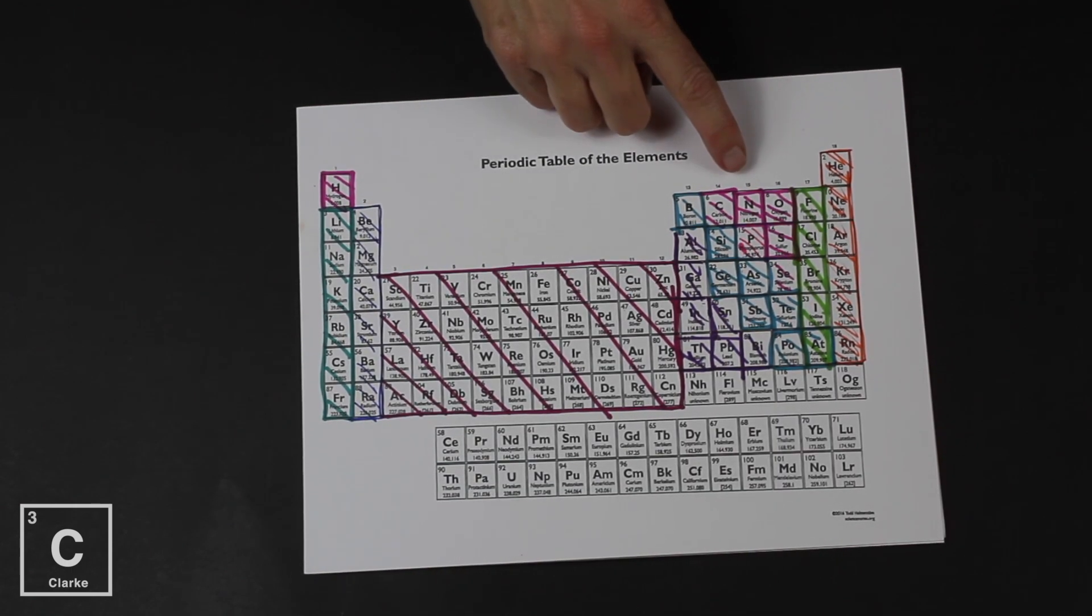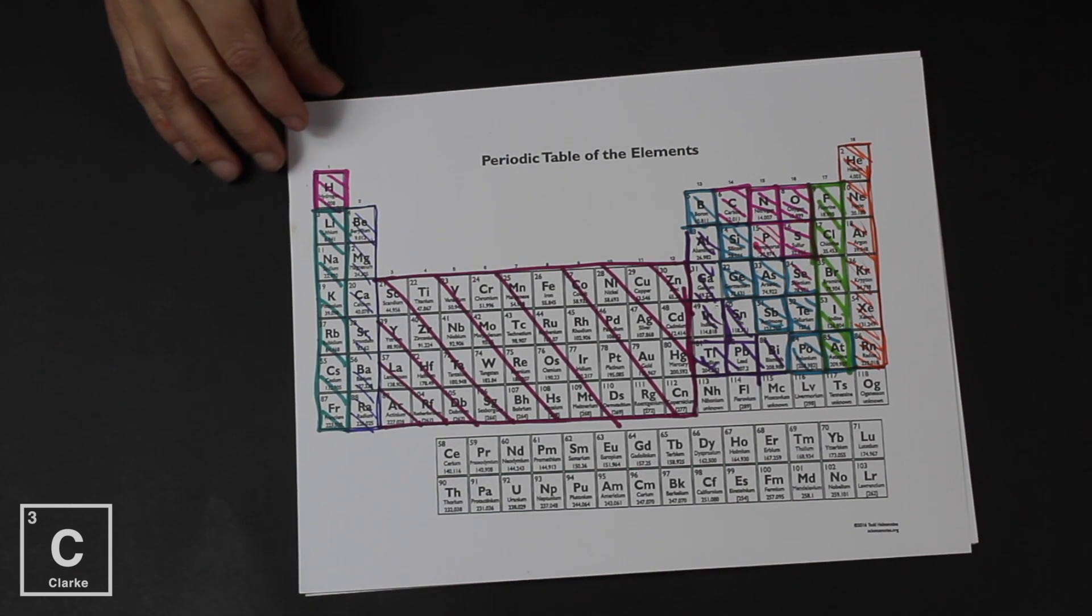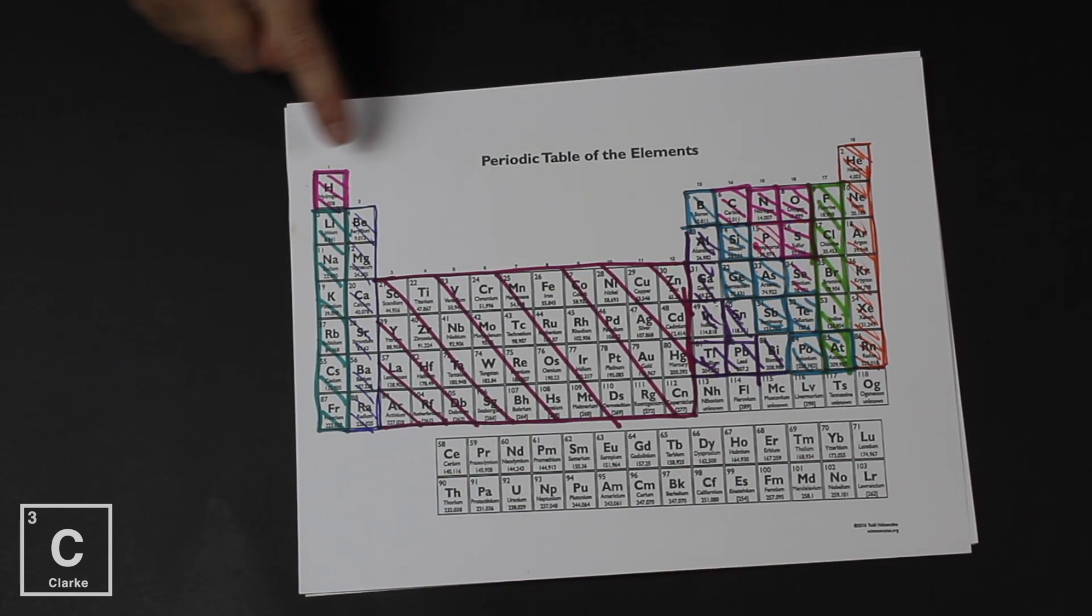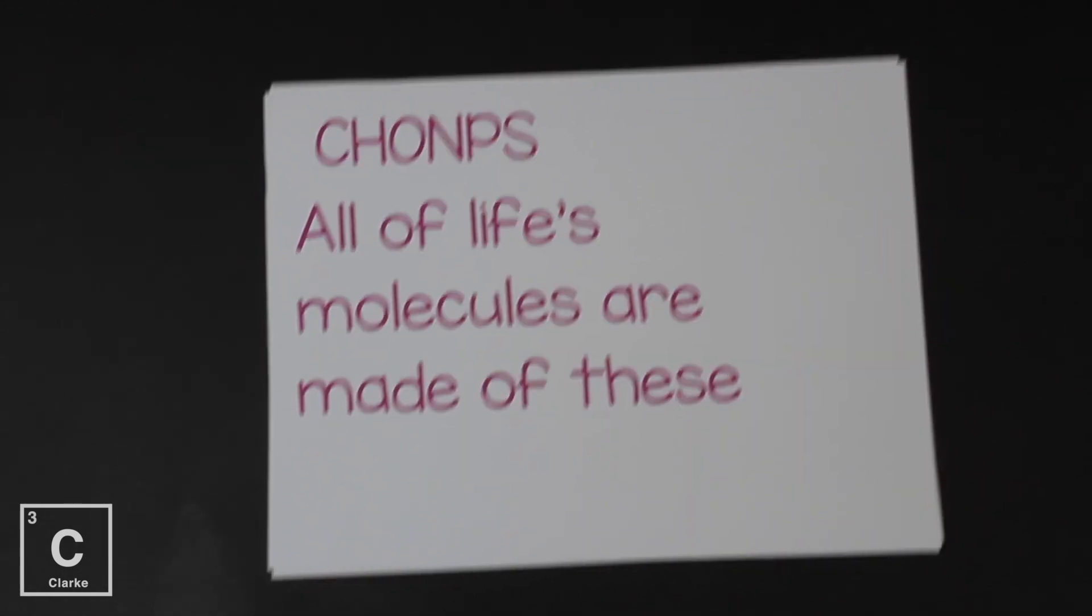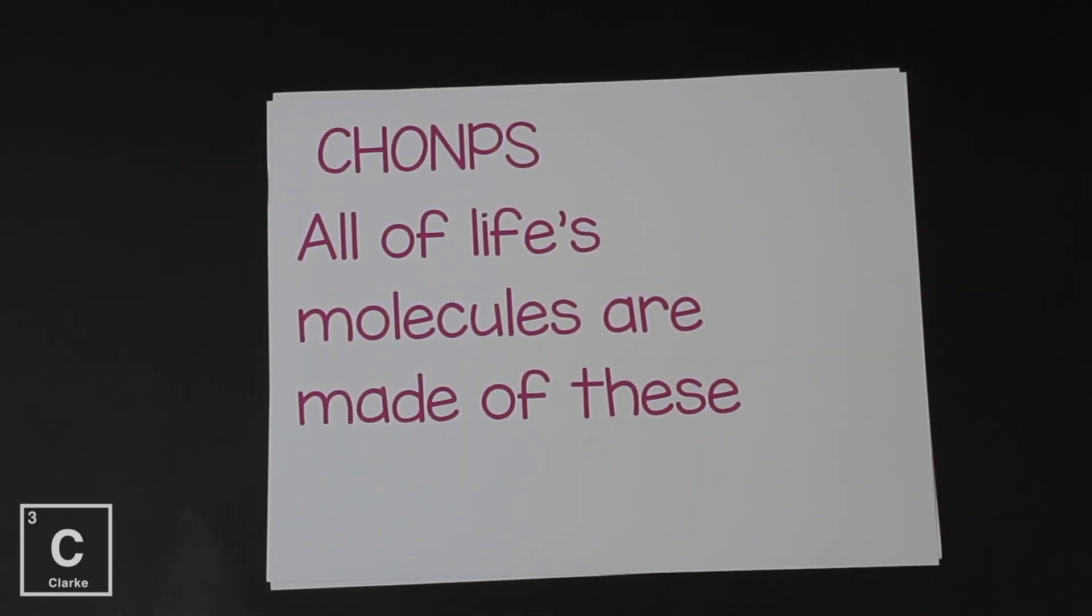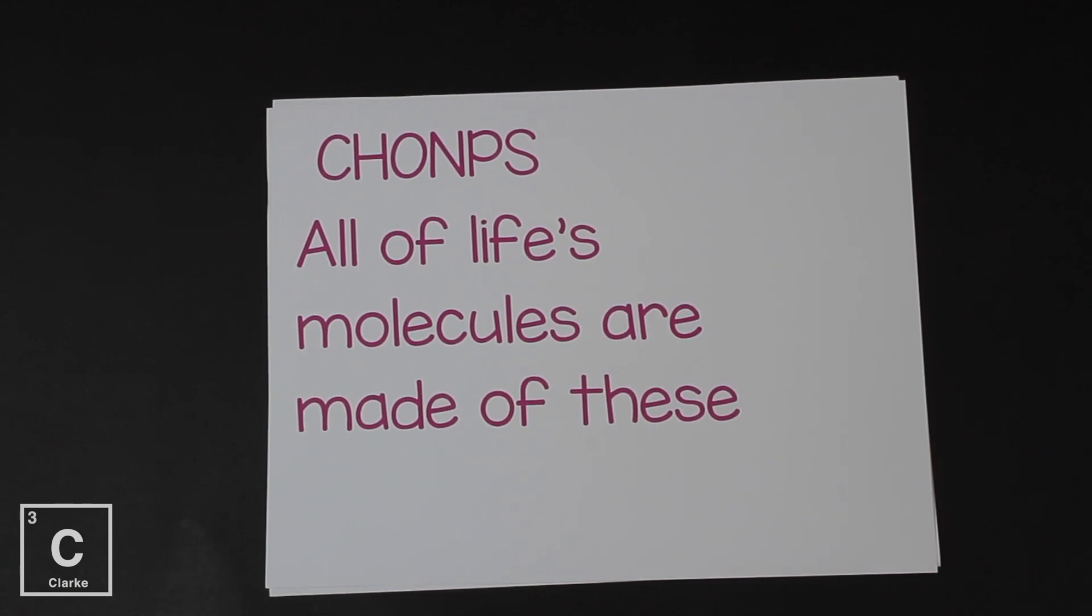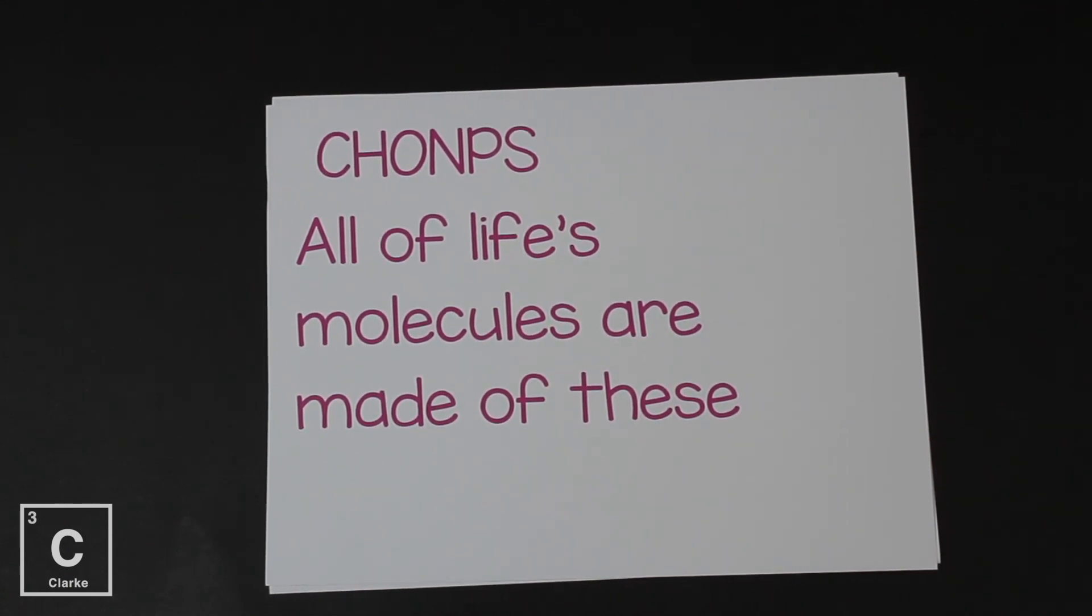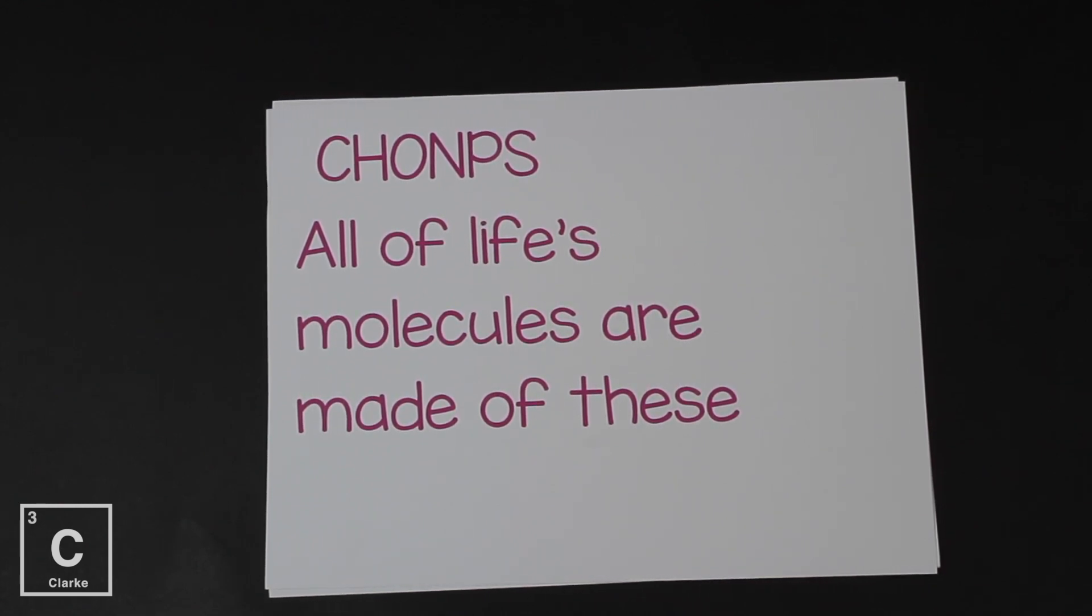And then I've added this last pink group right here. We can call these the CHOMPS - CHOMPS because we got C-H-O-N-P-S. Now the only reason I call our attention to the CHOMPS is because these are all of life's molecules. All of the macromolecules you learn about in biology - carbon, hydrogen, oxygen, nitrogen, phosphorus, sulfur - these elements are where all of the molecules of life come from.